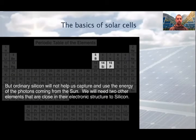Pure silicon alone is not enough in a solar cell because pure silicon has low semiconductor value. So, ordinary silicon will not help us to capture and use effectively the energy of photons coming from the sun. We will need a few other elements that are close in the electronic structure to silicon, which are boron and phosphorus.